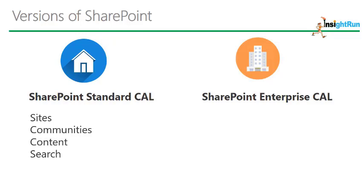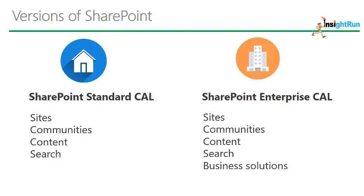The Enterprise license delivers the full capabilities of SharePoint such as Sites, Communities, Content, and Standard Search features plus entity extraction, video search, and item recommendations. Additionally, the Enterprise version contains features like Business Solutions, which includes Access Services and InfoPath Services, and Business Intelligence for Everyone, which includes Power View, PerformancePoint Services, Excel Services, and Visio Services.